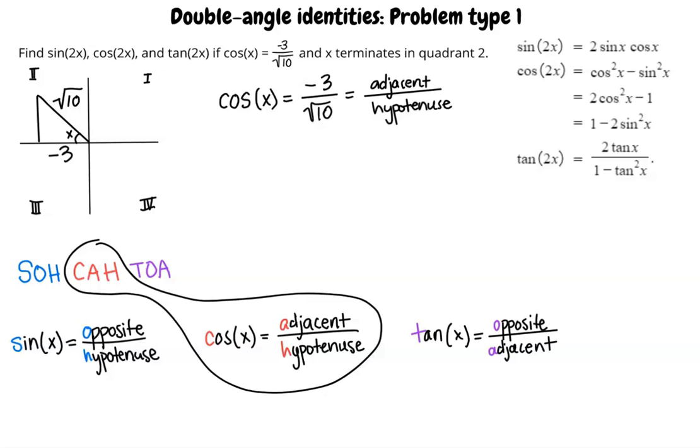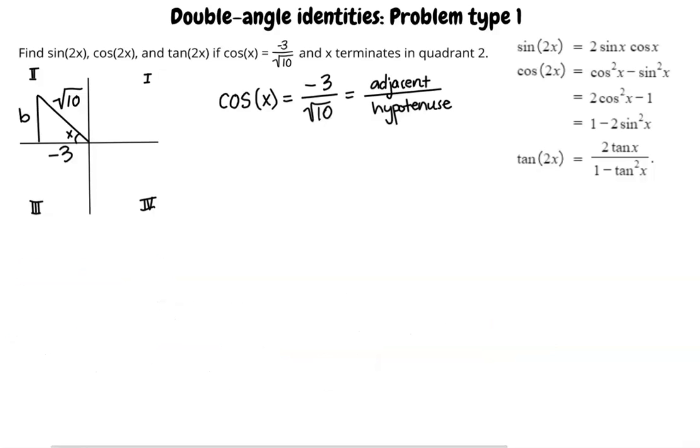Let's label our unknown side as b. How will we solve for b? Can we use the Pythagorean theorem, which is a squared plus b squared equals c squared? Yep, that's what we will use. We will let a equal negative 3, and c equal square root of 10.